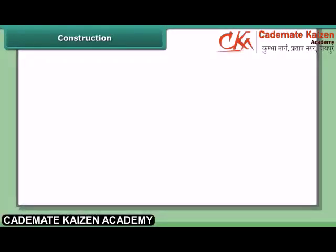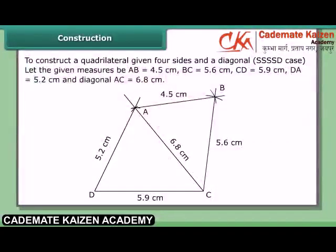To construct a quadrilateral given four sides and a diagonal — the SSSSD case. Let the given measures be AB = 4.5 cm, BC = 5.6 cm, CD = 5.9 cm, DA = 5.2 cm, and diagonal AC = 6.8 cm.